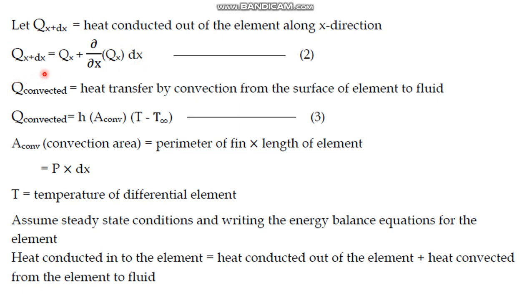The amount of heat convected to the surrounding atmosphere is given by h · A_convected · (T - T∞). The convected area for the elemental strip is the perimeter P of the fin times the element length dx, so dq_conv = h · P · dx · (T - T∞), where T is the temperature of the elemental area and T∞ is the surrounding temperature.